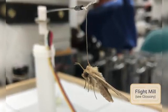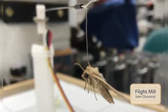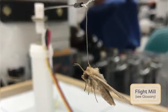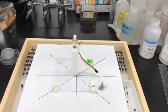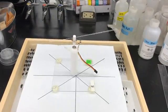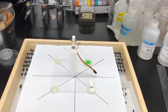Flight mills allow researchers to identify variables that influence insect dispersal propensity and distance. The insect is tethered to the arm of the mill and allowed to fly under specific conditions over a predetermined period of time.